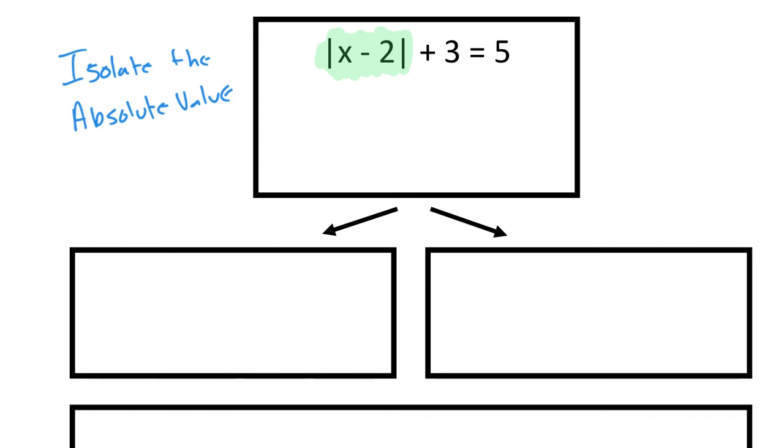So the way I would isolate this absolute value, one step. Subtract 3 from both sides. Absolute value of x minus 2 is 2.